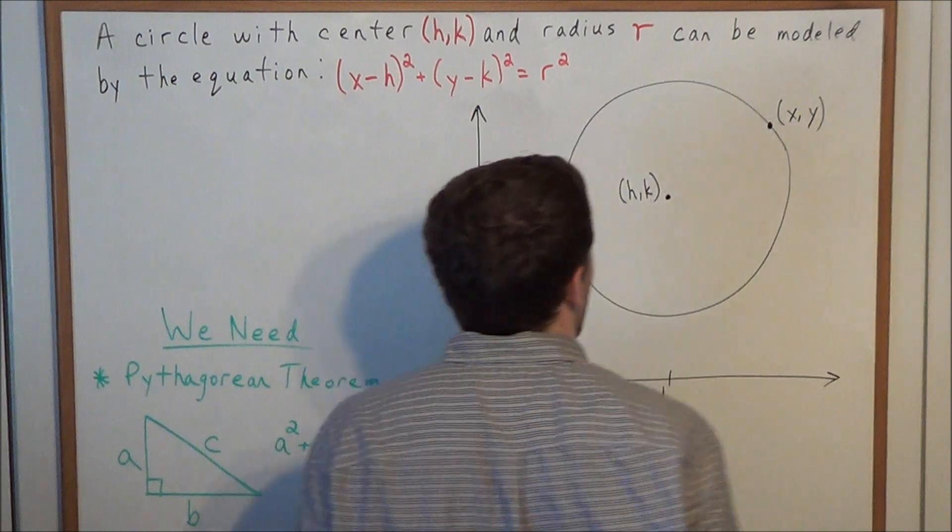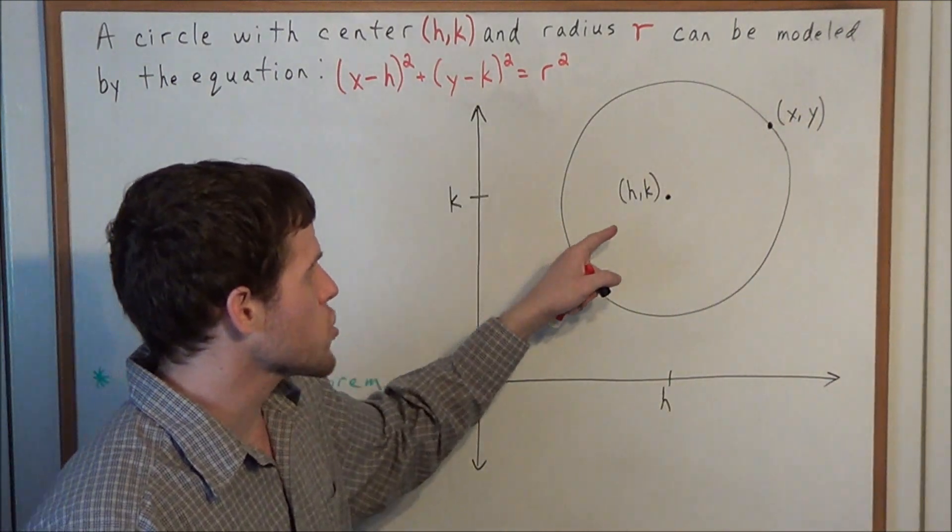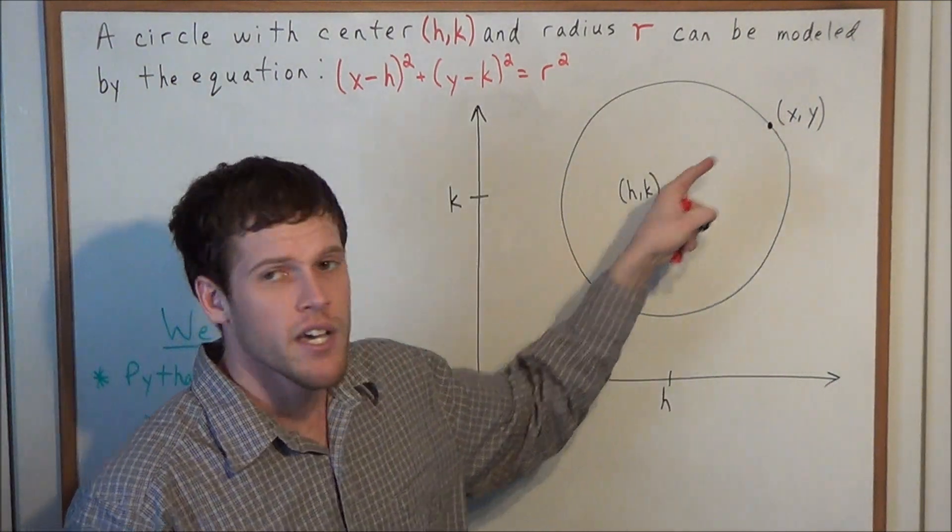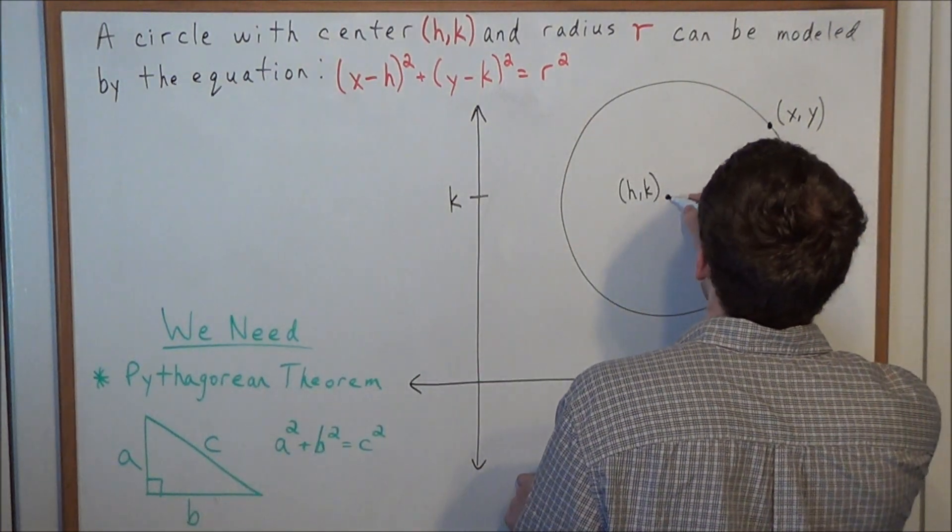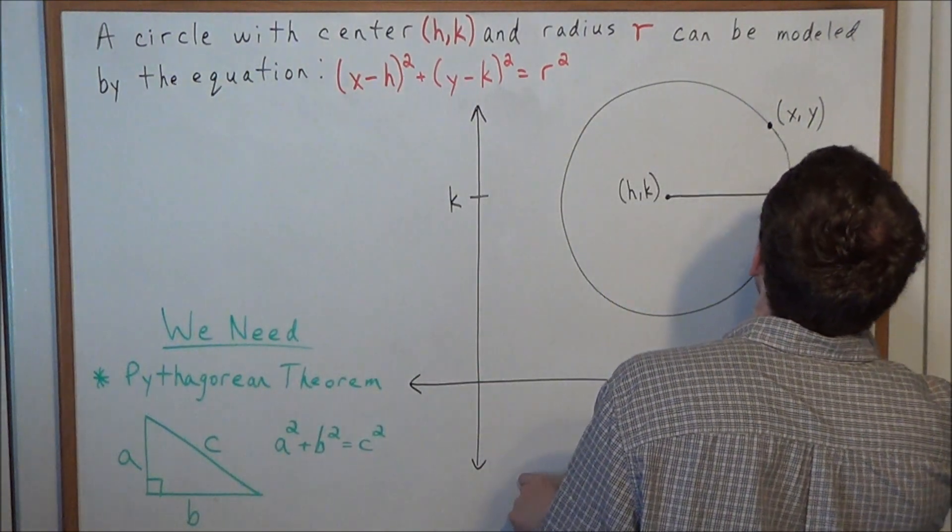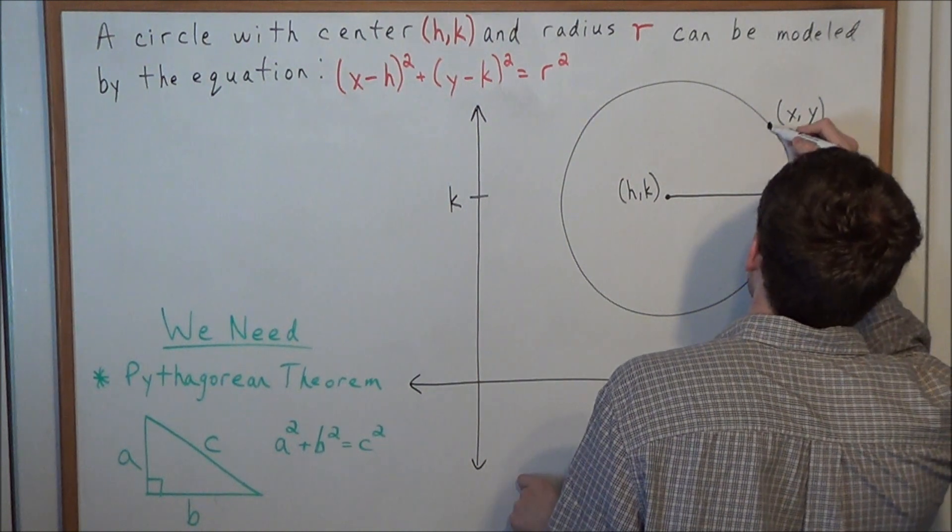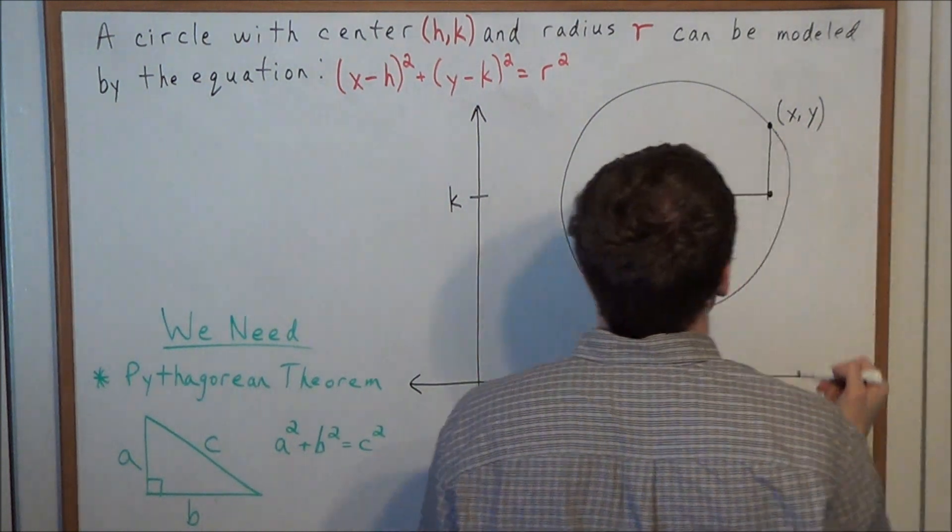So now I want to build a right triangle going from (h,k) to (x,y). So now we can draw a horizontal leg and next we can draw a vertical leg connecting these two points.